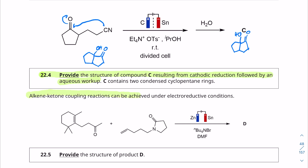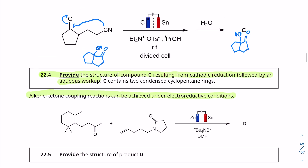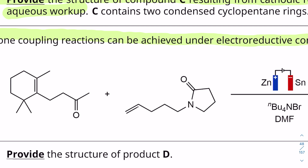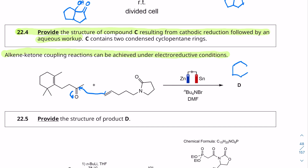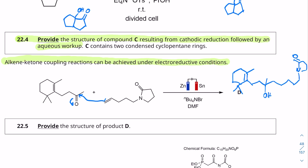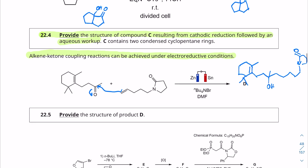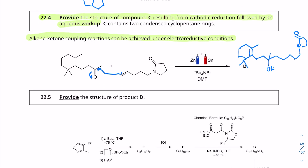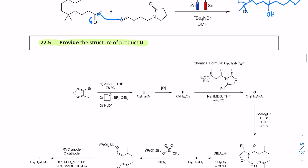Alkene-ketone coupling reactions can be achieved under electroreductive conditions. This is going to be similar to the previous reaction: the double bond gets reduced, electrons are placed there somehow, and it attacks the carbonyl and kicks up the electrons, then gets protonated. What you get is a large molecule with the coupled product. Again, no molecular formula is given to verify, but double-checking that the carbon count is the same — it is. So that is compound D for question 22.5.